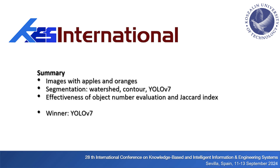In summary, we used images of apples and oranges to count the number of objects. For this, we used watershed, contour, and YOLO V7 segmentation methods. We verified the results by evaluating the number of objects and the Jaccard index. We obtained the best results with YOLO V7, meaning that solutions based on artificial intelligence and convolutional neural networks perform better than traditional methods.